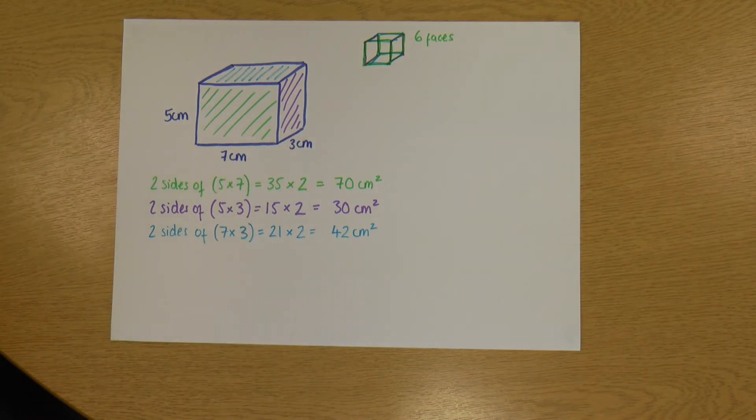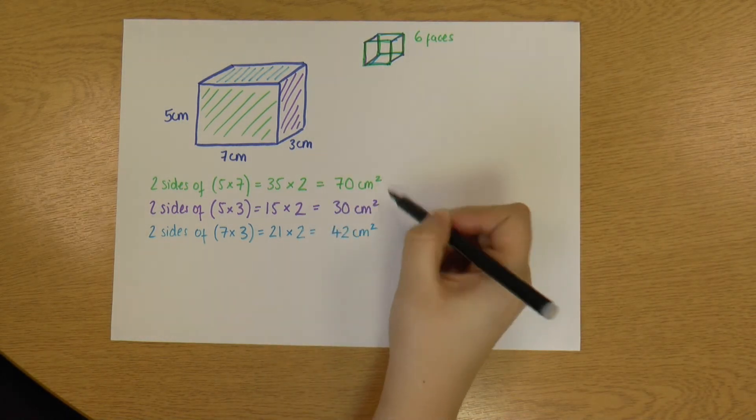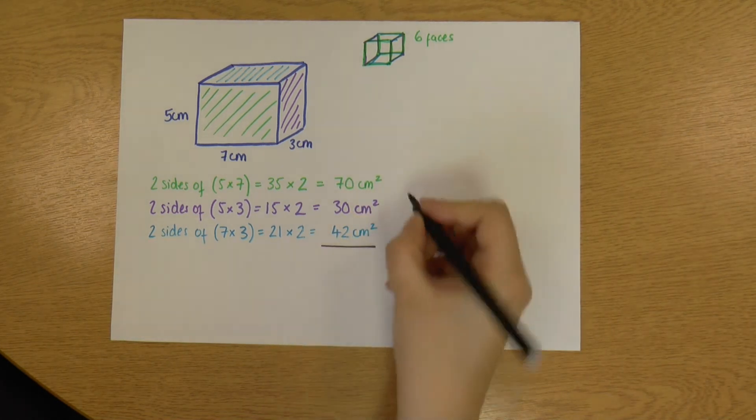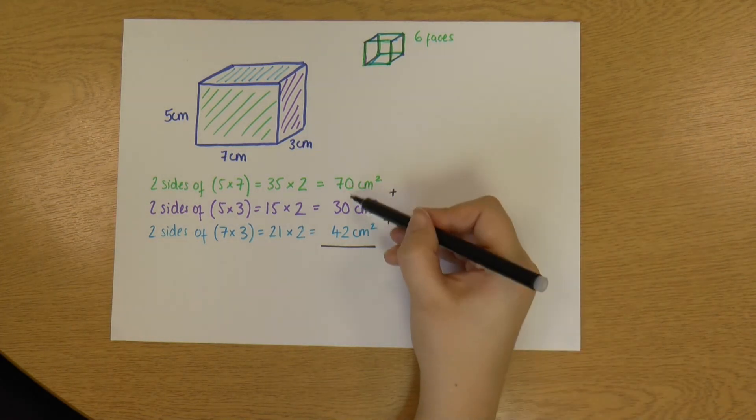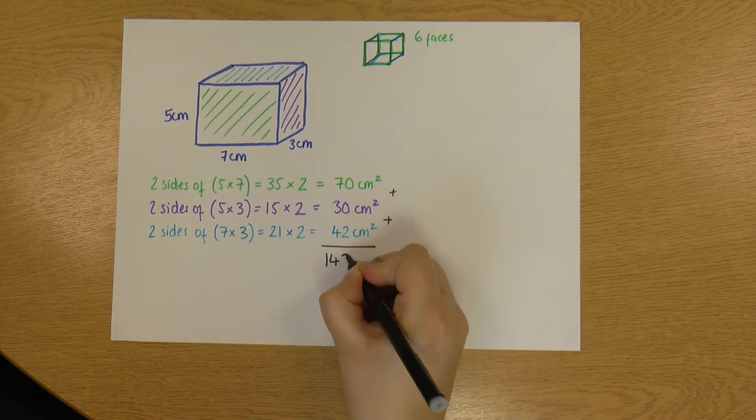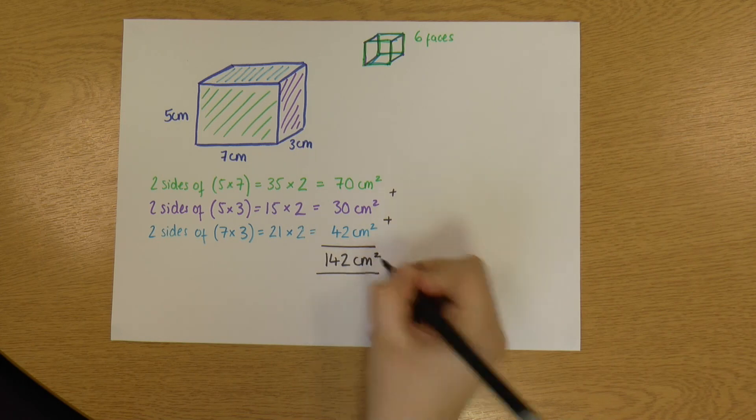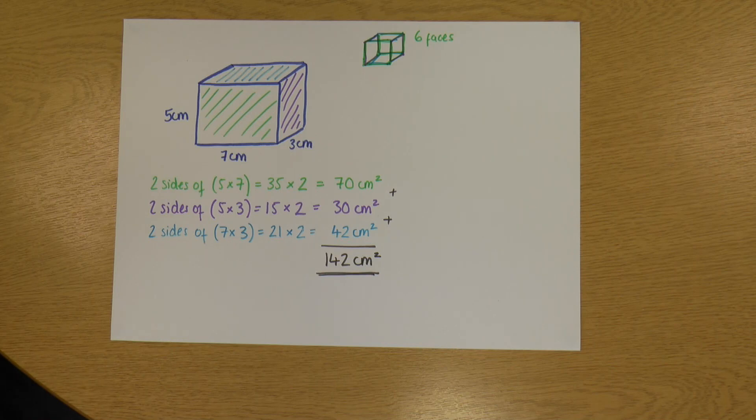Okay. So having done that, I've got the areas of each of my pairs of sides. And what I do is I just add those together. So 70 plus 30 is 100. Plus 42 is 142. We're still in cm². But my answer is 142 cm² for the surface area of a cuboid.